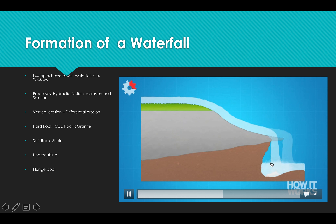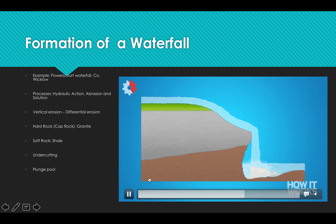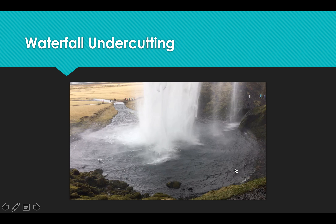A plunge pool is forming there. The cap rock has collapsed, and this will be undercut again — cap rock forming again, which will collapse — and the process continues back upriver. The load of the river has also deepened the bed. The method by which the river works its way back upstream is called headward erosion, and that can form a gorge, which we'll look at in a moment.